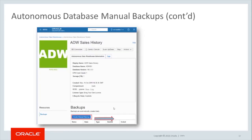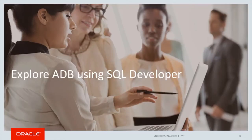To create a manual backup from the database console page, select Create Manual Backup. When you click Create Manual Backup the first time, you will have to provide the name of the object store bucket you created previously. Then proceed with the backup. Again, manual backups are not required or necessary since Autonomous Database automatically performs daily incremental backups of the database.